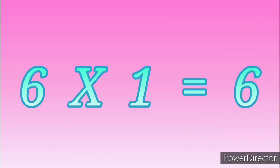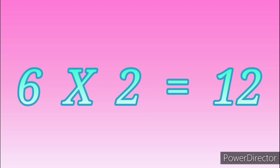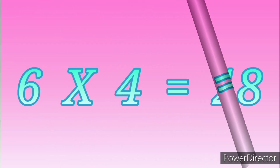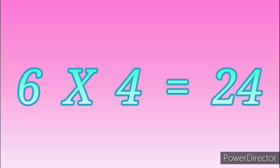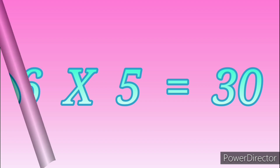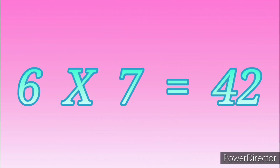6 ones are 6. 6 twos are 12. 6 threes are 18. 6 fours are 24. 6 fives are 30. 6 sixes are 36. 6 sevens are 42.